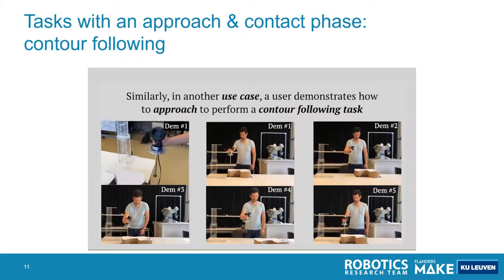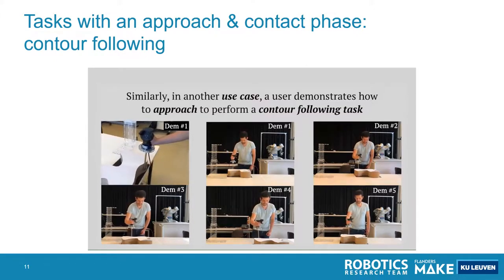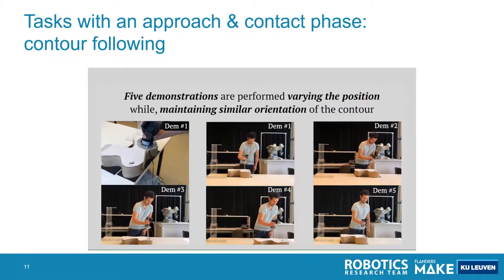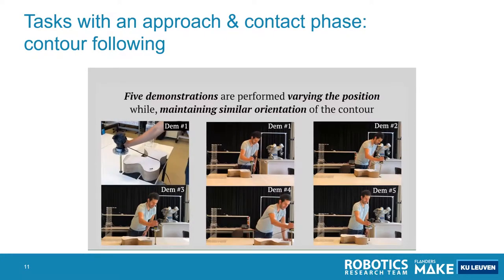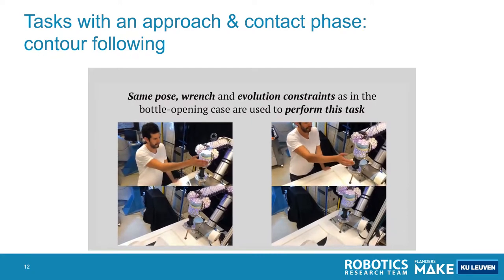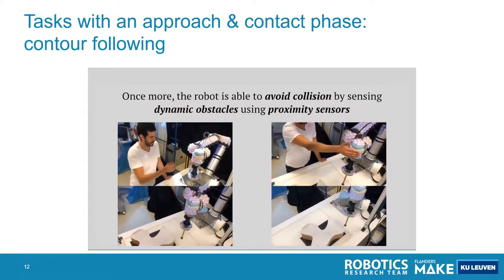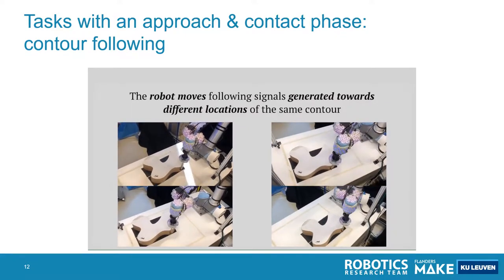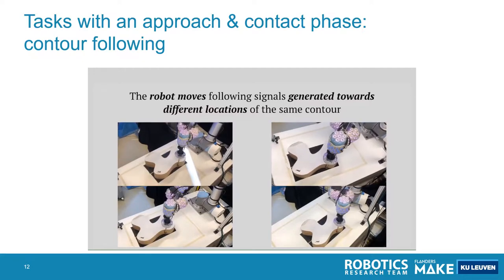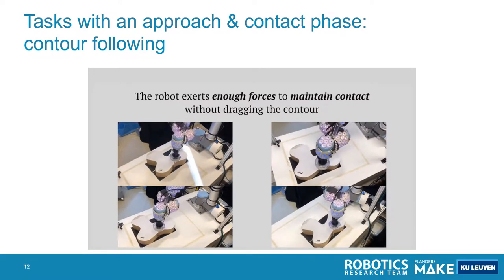Using the same generalized skill, we demonstrate a completely different task: contour following. Again, we move first in free space to make contact, and then we maintain contact to execute the contour following task. We also demonstrate disturbances during execution, and because we have a model-based system, we can still add additional behaviors to the system. It's important to note that the position of this contour is not exactly the same, and our approach still works when this position is varied significantly, although our approach currently is not really able to handle large variations of the orientation.